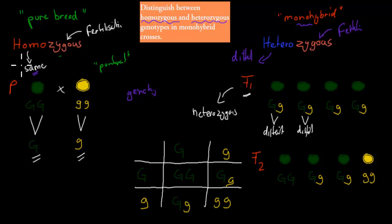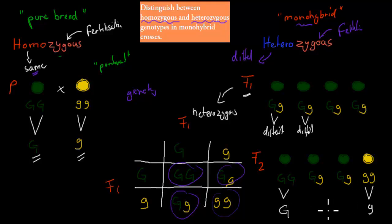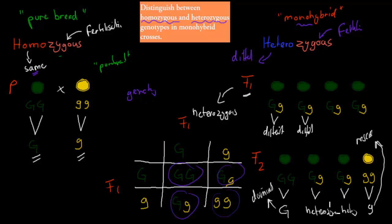Then we crossed the F1 generation with each other and got these results. Two of them were homozygous: one here with only capital G — homozygous dominant — and one with only small g — homozygous recessive. And these two here were heterozygous, because they have different types of alleles.